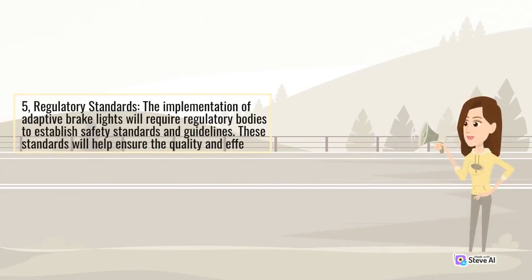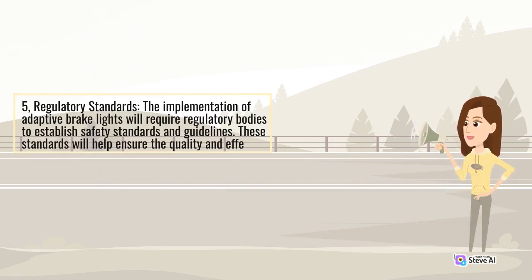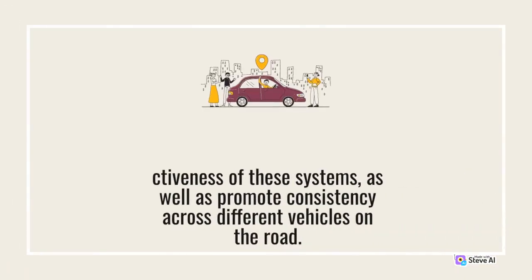5. Regulatory Standards: The implementation of adaptive brake lights will require regulatory bodies to establish safety standards and guidelines. These standards will help ensure the quality and robustness of these systems, as well as promote consistency across different vehicles on the road.